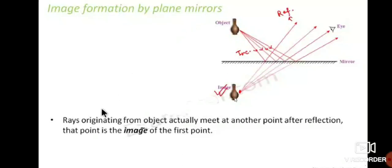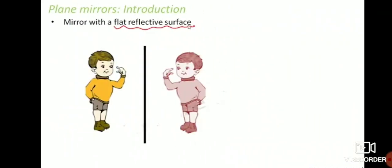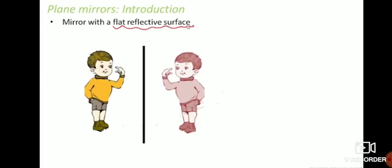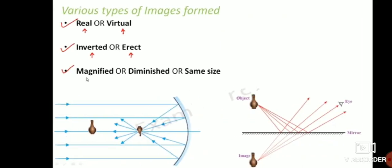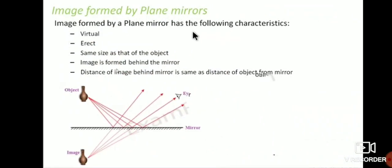Rays originating from an object actually meet at another point after reflection — this point is the image of the first point. Today's homework is to write the characteristics of the image formed by a plane mirror.